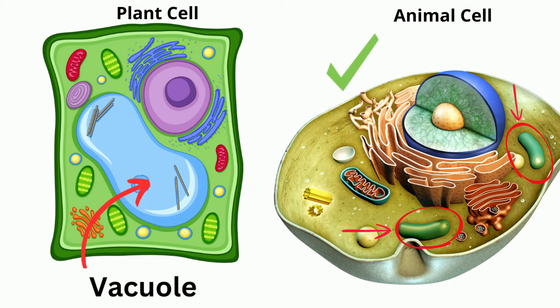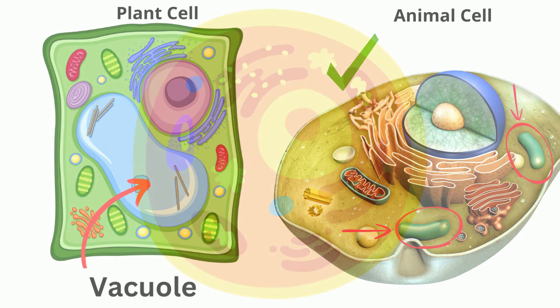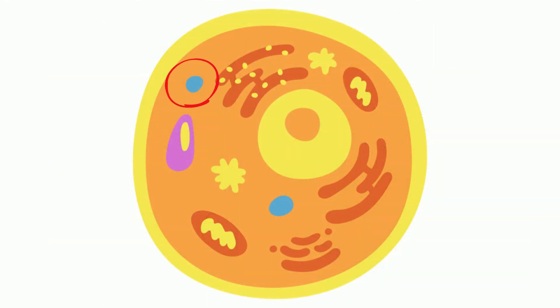In animal cells, the vacuoles are smaller, but you have more of them. The number of vacuoles depends on the type of animal cell.